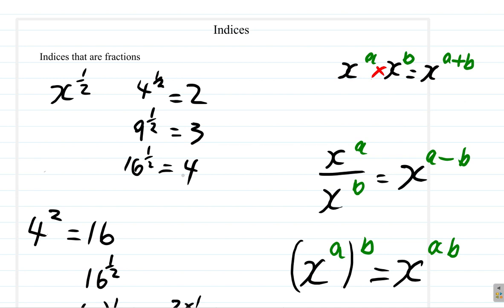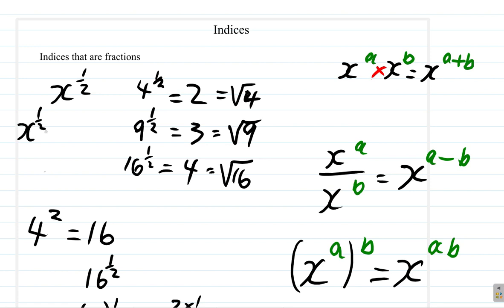You see some type of pattern here. It seems like 4 to the half is 2, and 2 is the square root of 4. 9 to the half is 3, and 3 is the square root of 9. 16 to the half is 4, and 4 is the square root of 16. So this pattern is saying that x to the half is the square root of x, which is true.